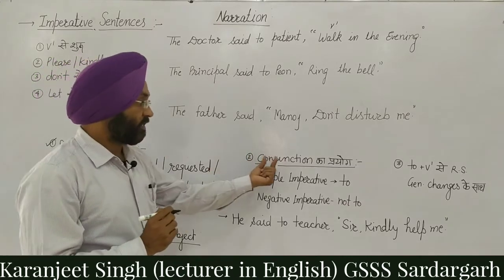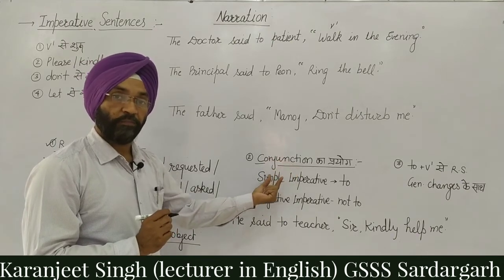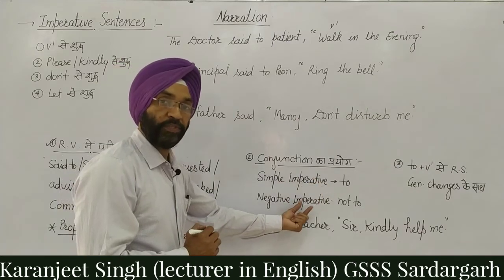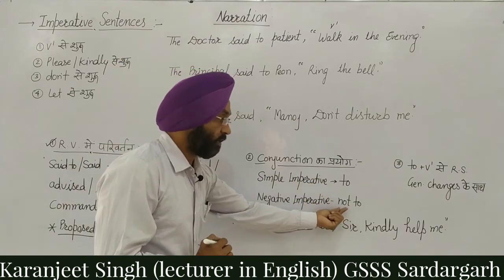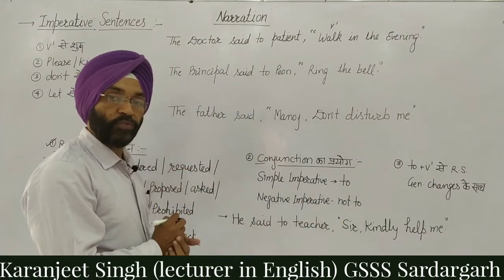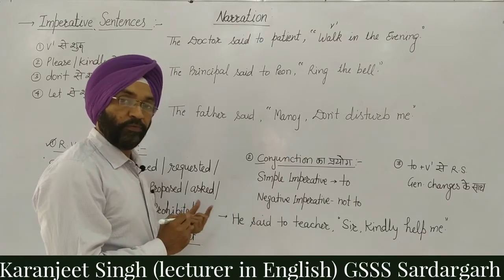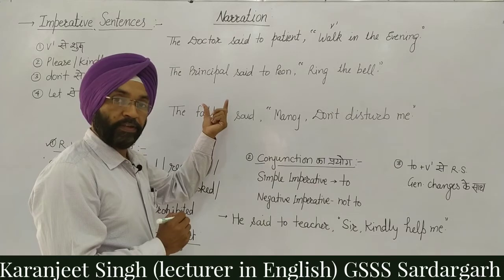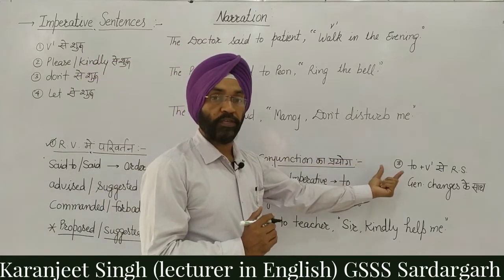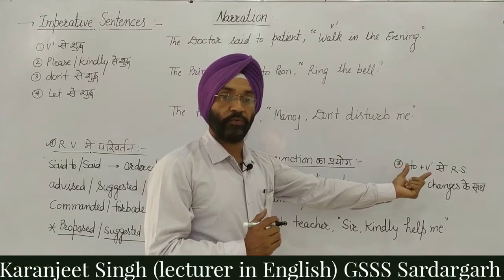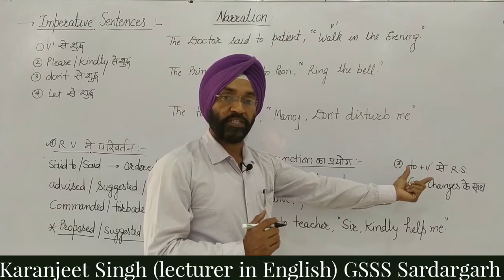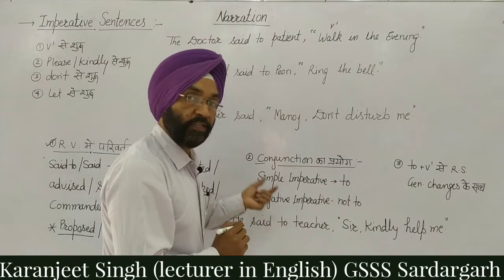Reporting verb ke change ke baad, second change conjunction ka use hota hai. General imperative sentences mein 'to' conjunction ka use karte hain. Negative imperative sentence mein 'not' ko 'to' se pehle lagate hain, ya uski jagah 'forbade' verb ka use kar sakte hain. Is tarah reporting verb aur conjunction ka change karte hain imperative sentence mein. In changes ke baad, first form of the verb se sentence likhte hain — 'please', 'kindly', 'sir', 'madam' jaise words hata dete hain.